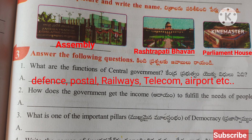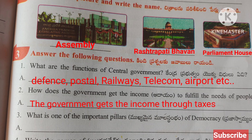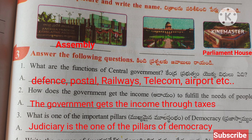Question Two: How does the government get the income to fulfill the needs of people? The government gets income through taxes. Question Three: What is one of the important pillars of democracy? Judiciary is one of the important pillars of democracy.